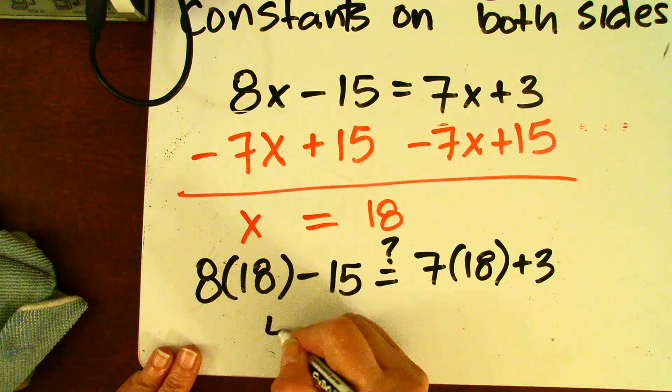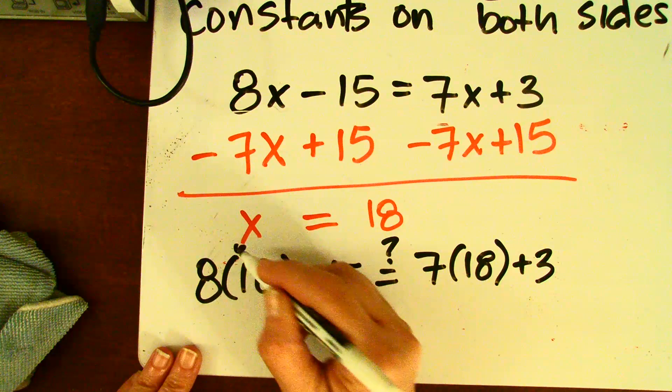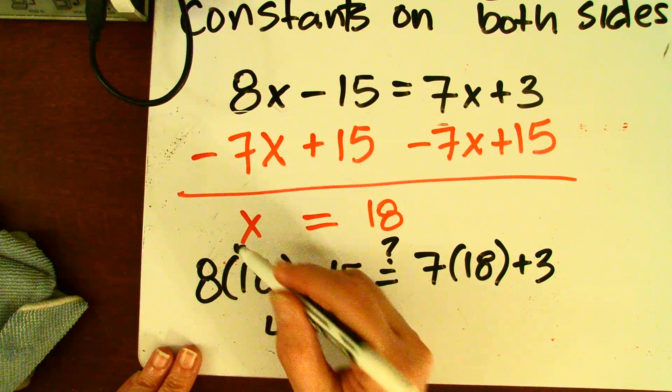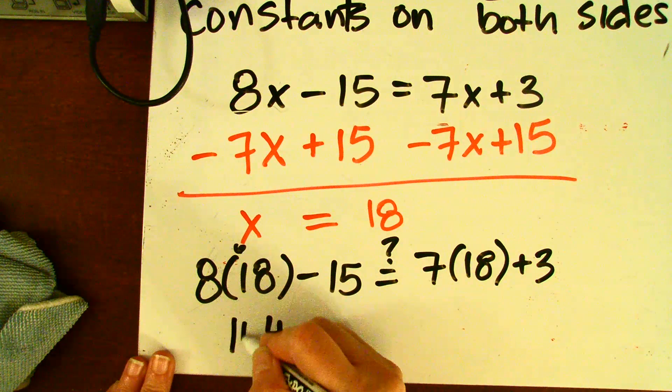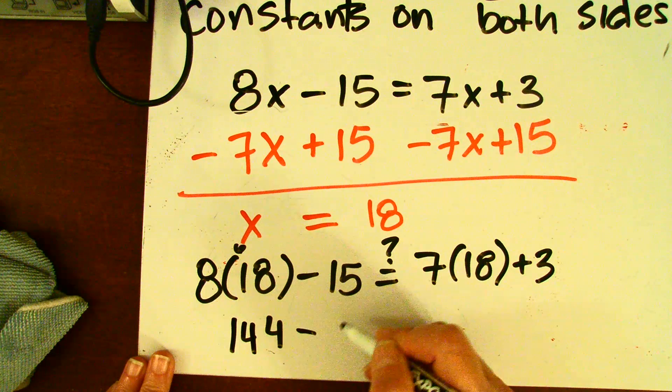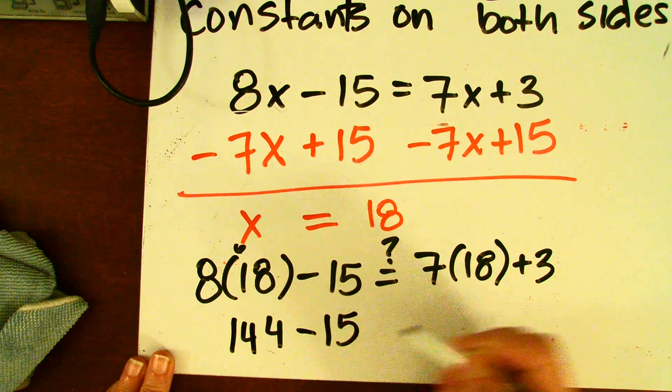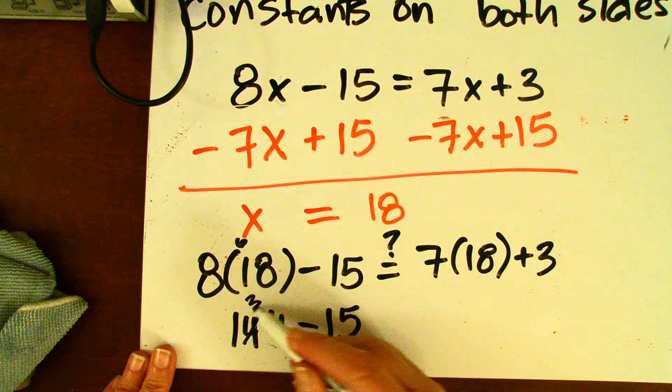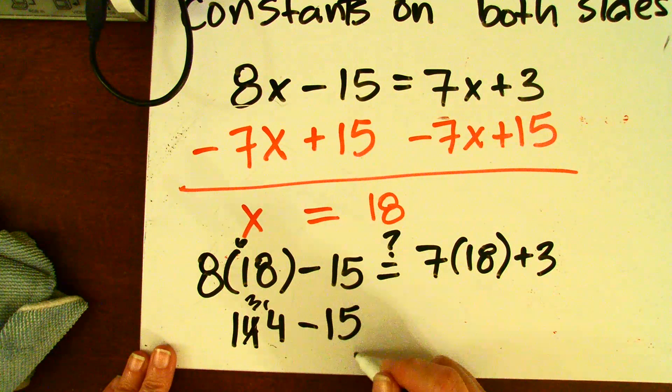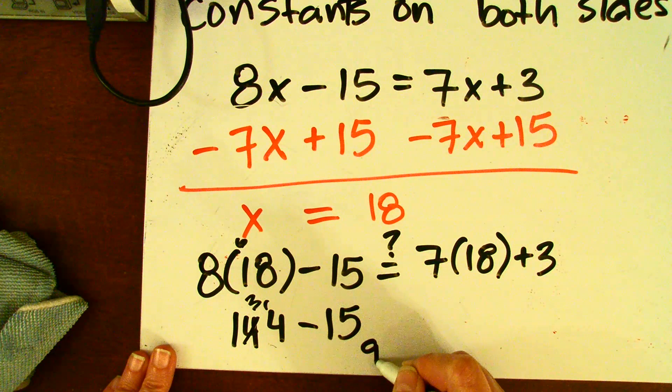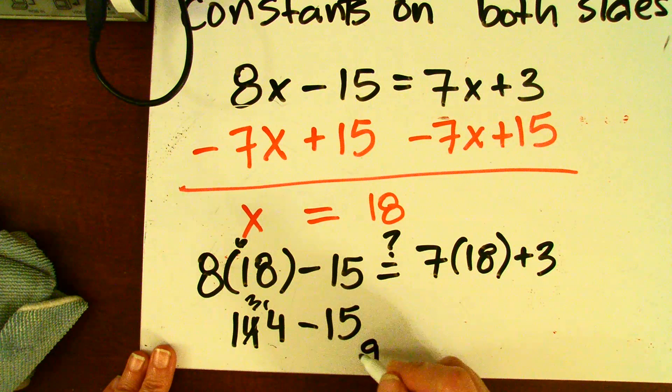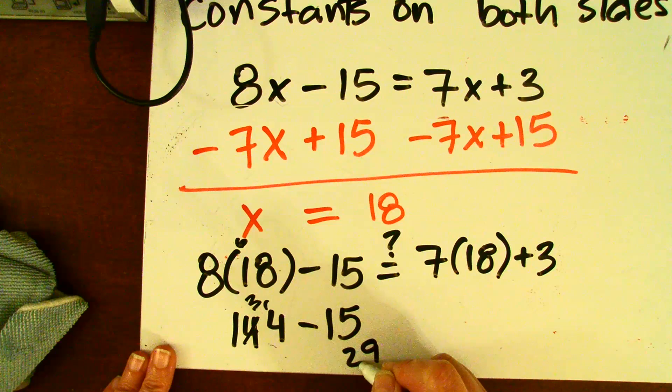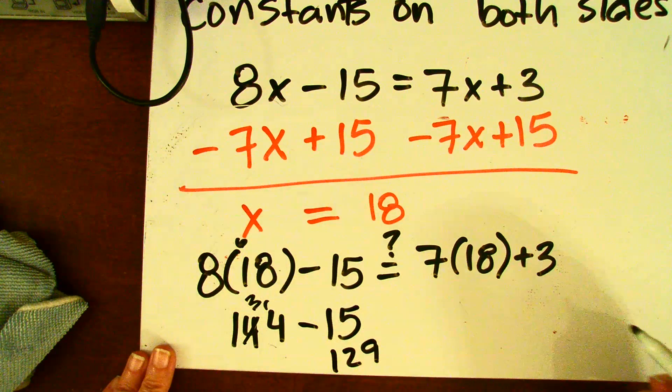8 times 8 is 64. 8 times 1 is 8, plus 6 is 14. So, 144 take away 15, 14 take away 5 is 9, and 3 take away 1 is 2, and then a 1. So, 129.